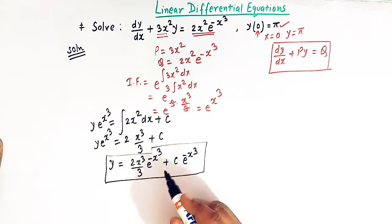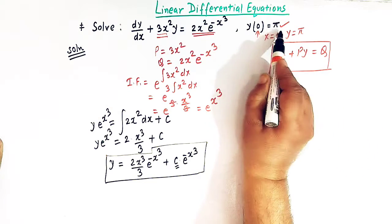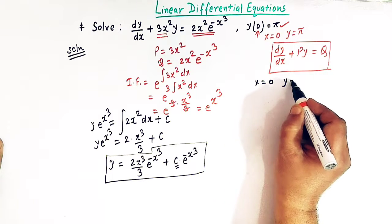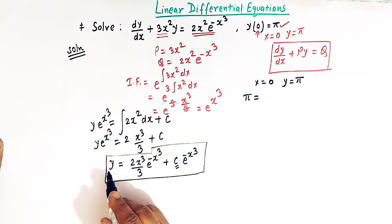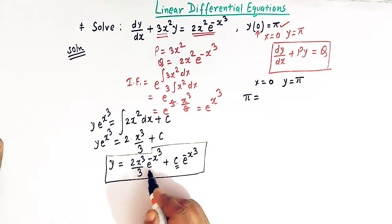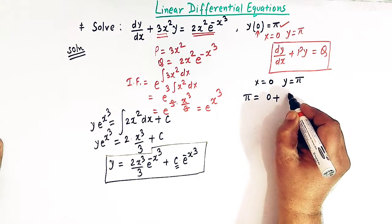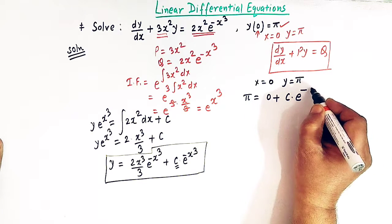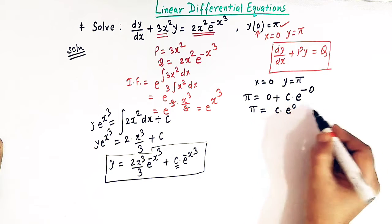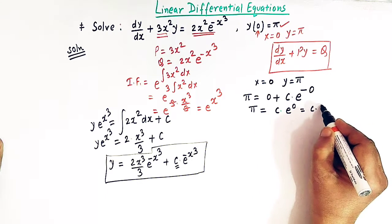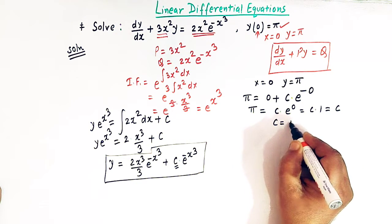To find the constant of integration c, we apply the initial conditions x = 0 and y = π. Substituting: π = 2(0)³/3 · e^0 + c · e^0. The first term is 0, and e^0 = 1, so π = c.